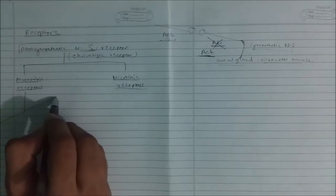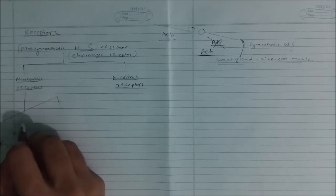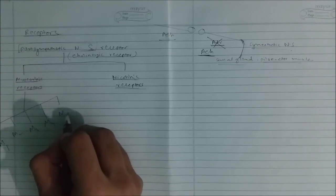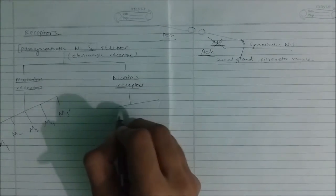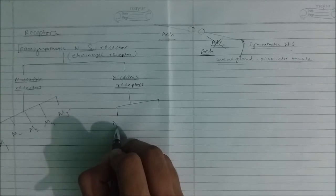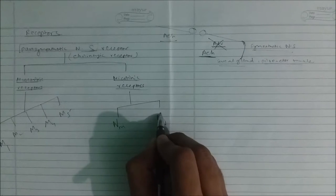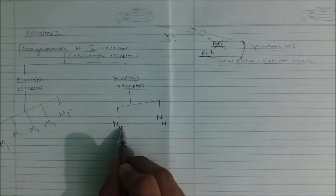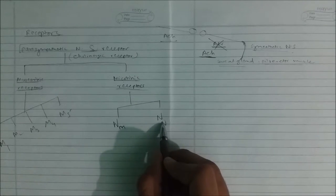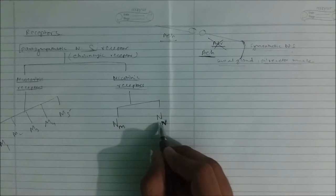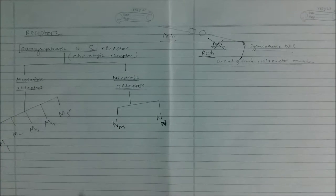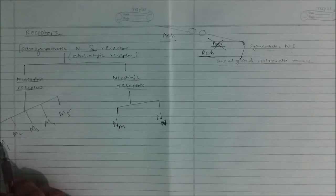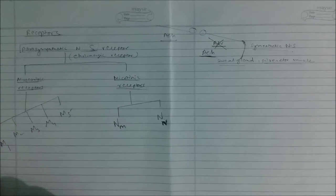There are five types of muscarinic receptors: M1, M2, M3, M4, and M5. There are two types of nicotinic receptors: Nm, present at the neuromuscular junction, and Nn, present at the neuronal junction. Among these receptors, some are excitatory and some are inhibitory.